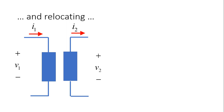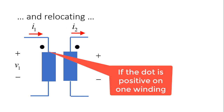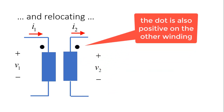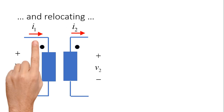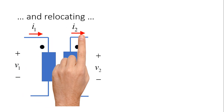This is what engineers thought: let's mark the top of each winding before we separate them, at least in the drawing. We put a dot on the top of the primary, we put a dot on the top of the secondary, and now we can state the dot convention: where the dot is more positive on the primary, the dot is more positive on the secondary. When the current enters the dot on one side, it leaves the dot on the other side.